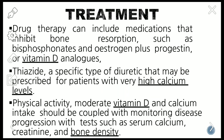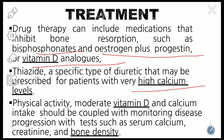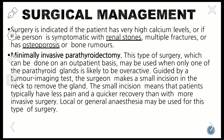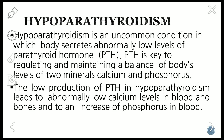Treatment includes drug therapy with medications that inhibit bone resorption such as bisphosphonates, estrogen, progesterone, and vitamin D analogues. Thiazide diuretics may be prescribed for patients with high calcium levels and physical inactivity. Vitamin D and calcium intake should be coupled with monitoring of disease progression such as serum calcium, creatinine, and bone density. Surgical management includes parathyroidectomy, which can also be helpful.